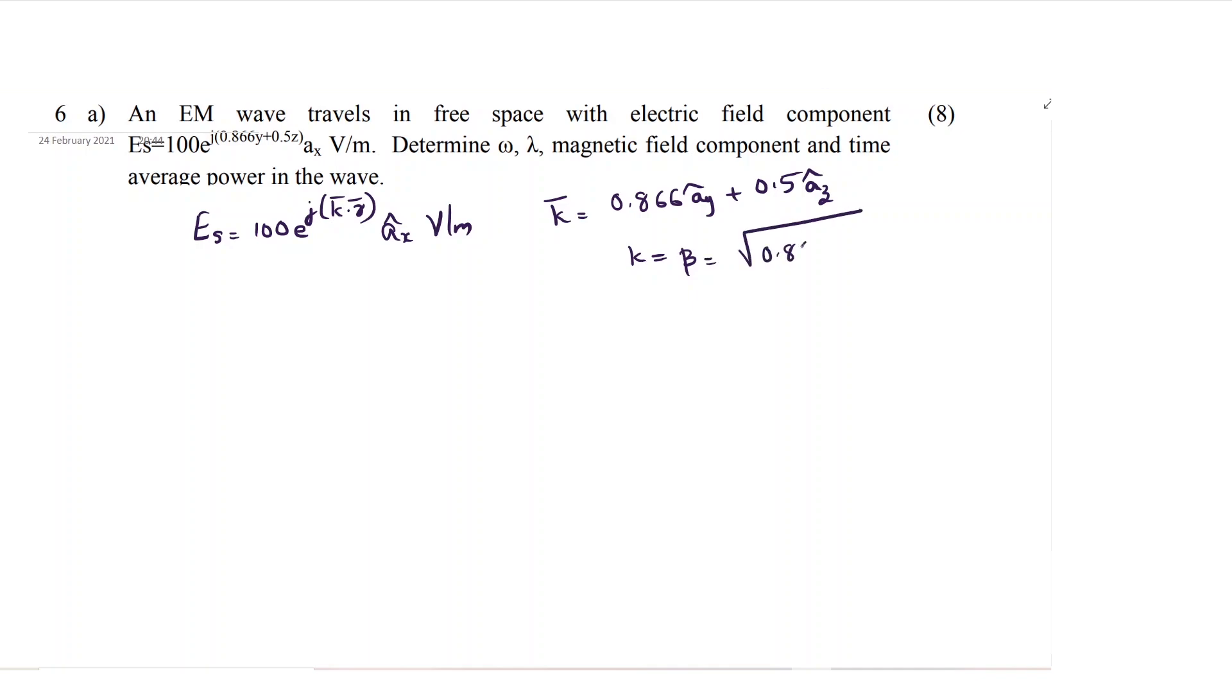That will be equal to square root of 0.866 square plus 0.5 square. You will be getting this as 1. So you got the value of beta.